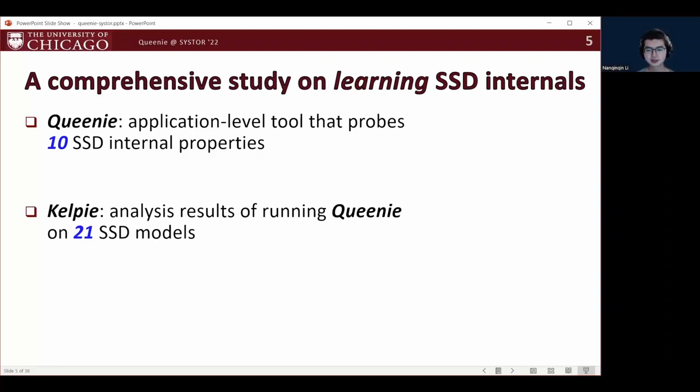QALPI is the analysis results of running QINI on 21 different SSD models from seven major vendors. The results include an extensive report of general findings and trends, as well as six major findings that we deem both interesting and unique.